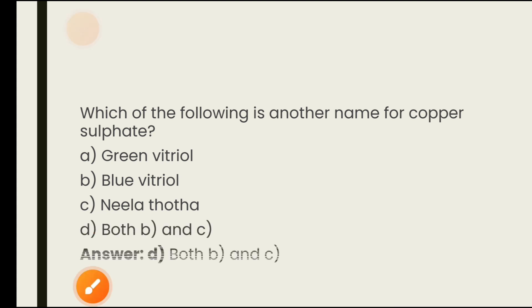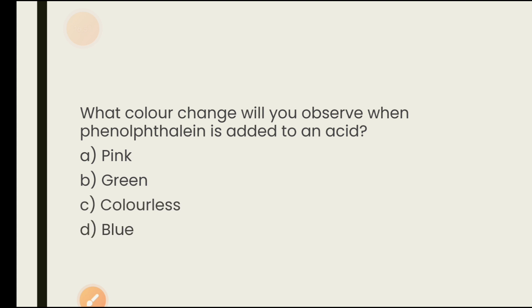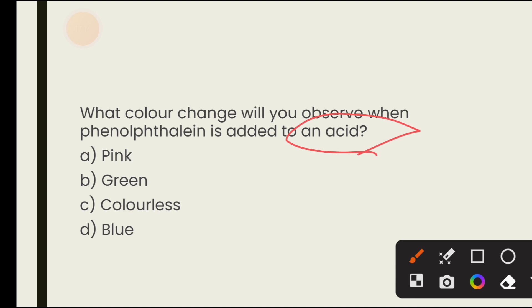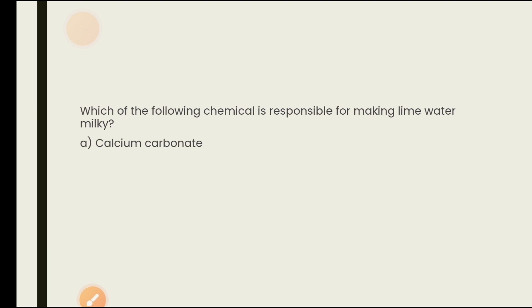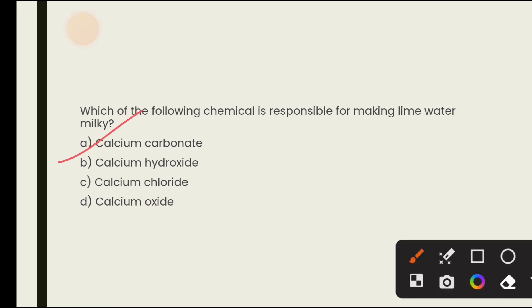Which colour change will you observe when phenolphthalein is added to an acid? Options are pink, green, colourless, blue. When you add phenolphthalein to any acid, there is no colour change — it remains colourless. Remember: phenolphthalein is colourless with acid and gives pink colour with base. Also, which chemical makes lime water milky? The answer is calcium carbonate — option A.